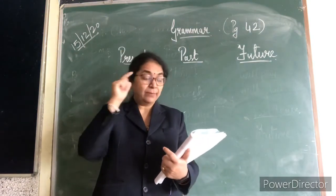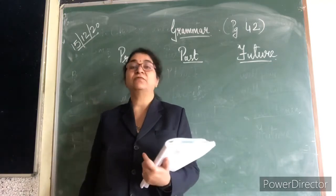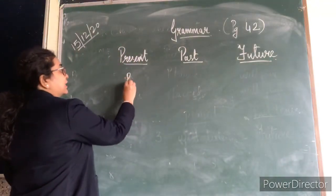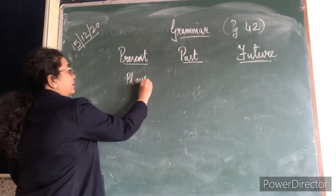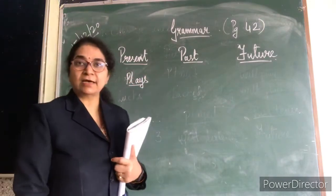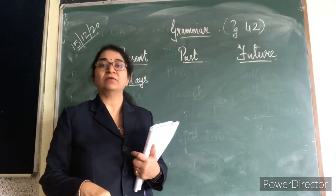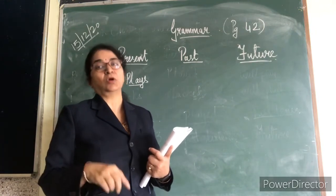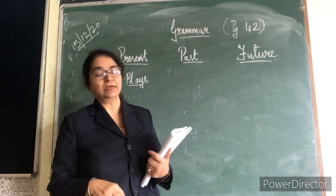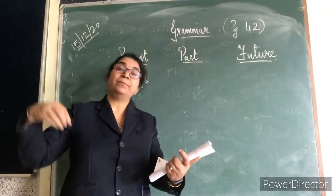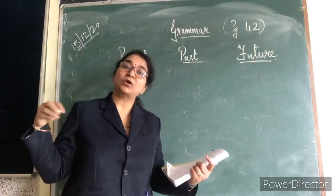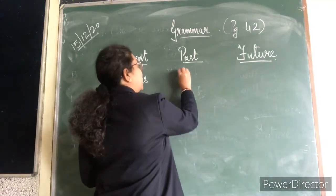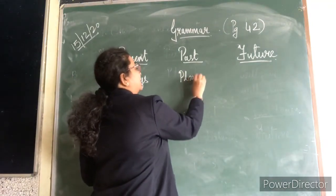First sentence: Rani plays with her dolls. Plays — kheel rahi hai, she is playing right now. That is present. Rani played with her dolls — she has already played, kheel chuki hai. That is past.